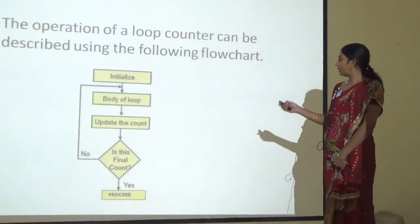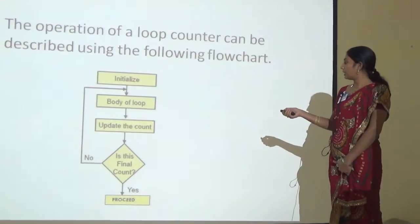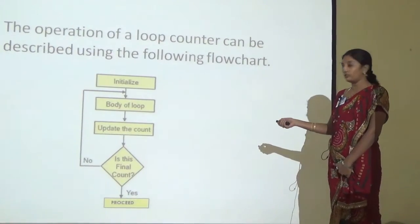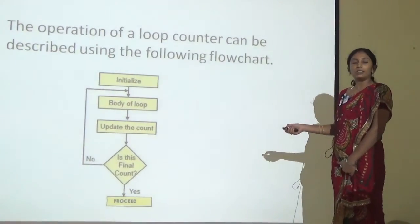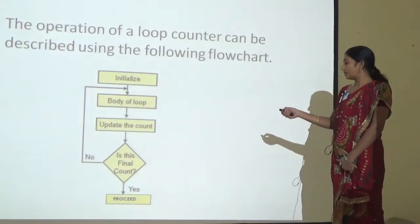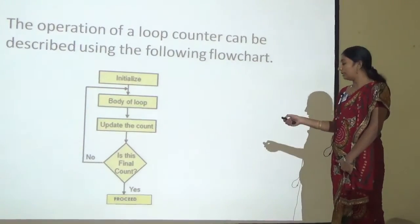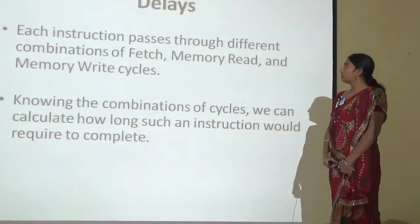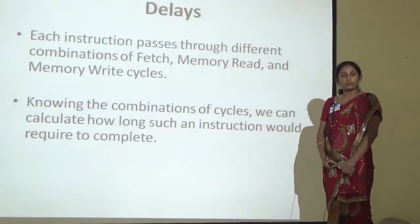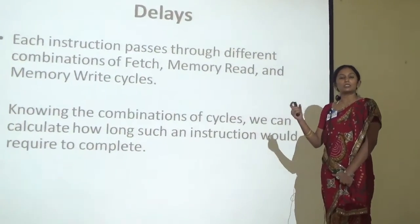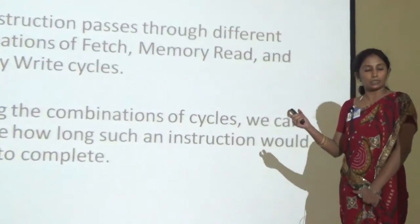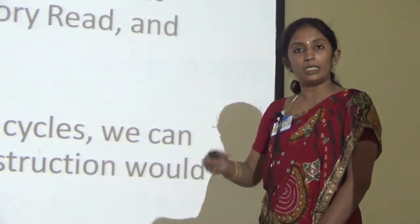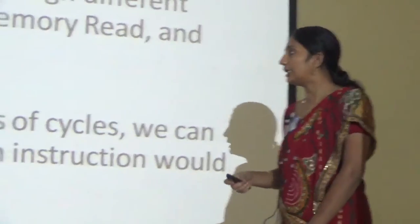We initialize the counter value, then execute the body of the loop, then update the counter. We load whatever value we want into the counter, check whether it has finished counting. If it has not finished counting, the loop keeps repeating. If it has finished counting, it comes out of the loop. This particular set of instructions can be used as a subroutine, which can be called anywhere in a program wherever you want to create a delay.